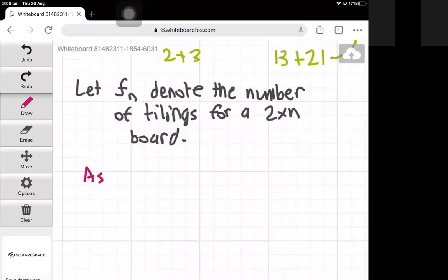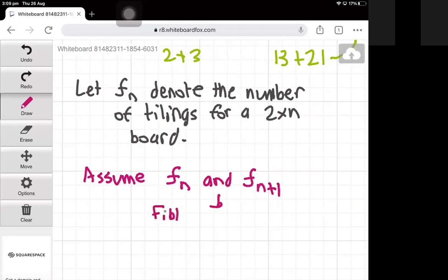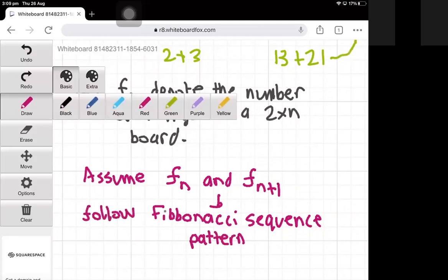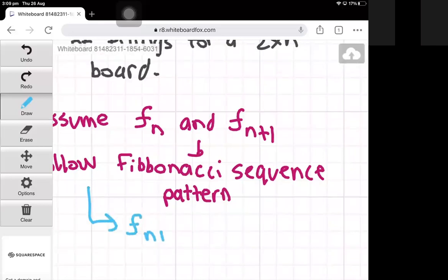We assume that F of n and F of n plus 1 follow the Fibonacci sequence pattern, and now we're going to find what F of n plus 2 is. We're going to find F of n plus 2 in terms of F of n and F of n plus 1.